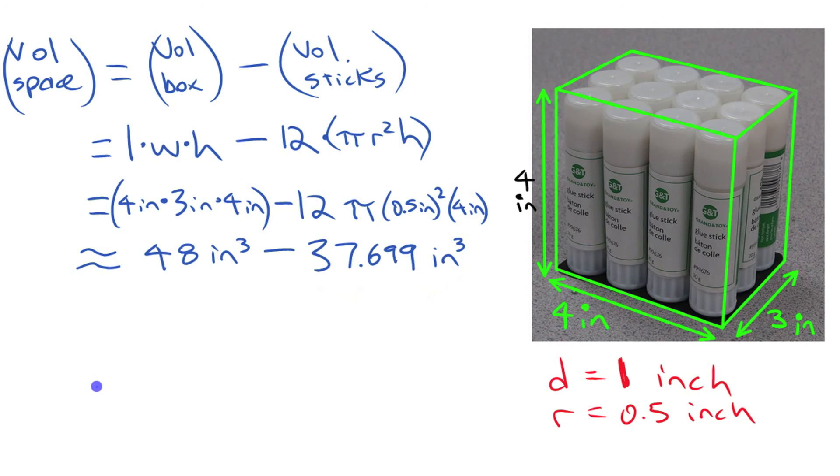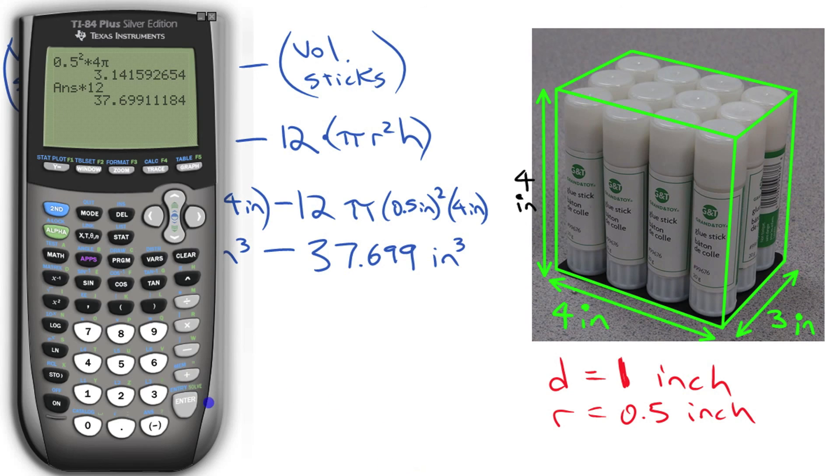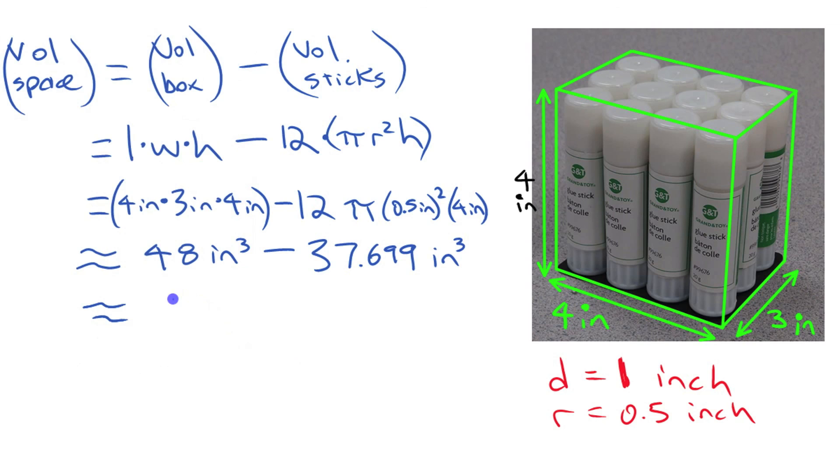So we got those two volumes to subtract those volumes, right? That's the volume of the box. That's the volume of the glue sticks. We're going to subtract those two things and see what we get. Now, so I want to go 48 minus, instead of entering that number again, this calculator, and lots of calculators have a feature where you can just use the last answer. Right above this negative button here, it says answer. So I'm just going to use that. 48 minus the answer gives me 10.3. All right.